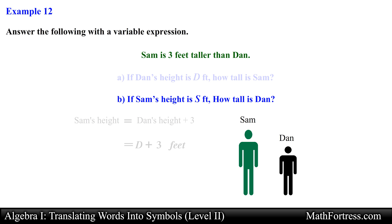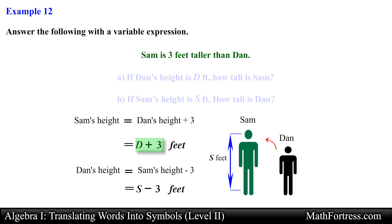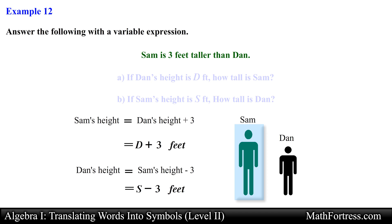The second question tells us that Sam's height is s feet and asks how tall Dan is. If you were Dan and looked at Sam, you would notice you were shorter than Sam, so your height equals Sam's height minus 3, resulting in s minus 3 feet. The first expression is from Sam's reference point and the second from Dan's. Both contain the same constraint — Sam is 3 feet taller than Dan — but the expressions differ depending on whose point of view we focus on. It's useful to put yourself in the character's shoes and think about their perspective.